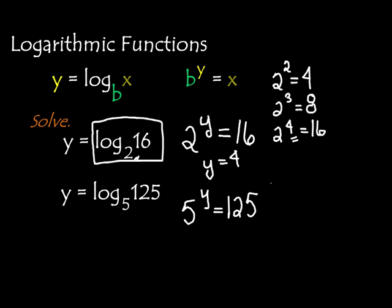So you can use your calculator on this one, but we're going to do it together. So 5 to the second is 25, and it just so happens that 5 to the third is my 125. So it turns out that y equals 3, because 5 to the third equals 125.